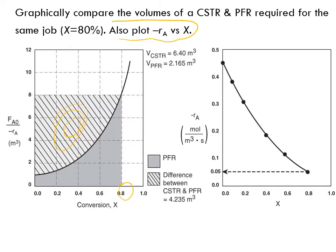Let's plot minus rA versus X. From the table, we had values of minus rA versus different values of X, and here we plot it. As the conversion increases — as the reaction progresses — the rate of reaction decreases, because the concentration of reactant A is decreasing. The rate of reaction is maximum when concentration is maximum, meaning no conversion, while at 80% conversion, where concentration is at its minimum, the rate of reaction is also at its minimum.